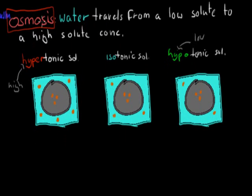If you remember what osmosis was. Osmosis was water, only water traveling from a low solute to a high solute concentration. Water travels from a low solute to a high solute concentration. Now here I've got these three same scenarios. Hypertonic, isotonic and hypotonic.